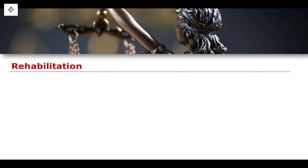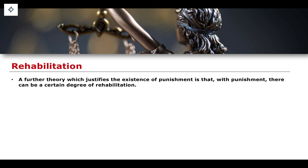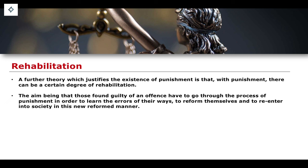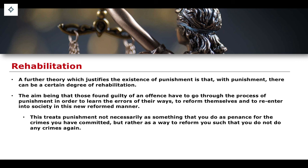The second justification for punishment is a rehabilitative format. The idea here justifies the existence of punishment in that where there is punishment, there can be a certain degree of rehabilitation. The aim is essentially getting those people who are found guilty of an offence to go through a process of punishment where they then learn the errors of their ways — they learn what is wrong, what is right, and how to behave effectively within society — so that they come out of this punishment process reformed and re-entering society in a new reformed way. This treats punishment not necessarily as penance, nor as deterrence, but rather as a means to reform individuals so that they do not commit crimes again.